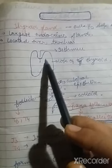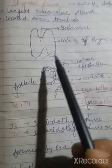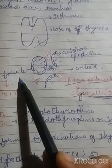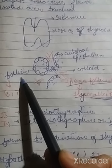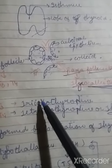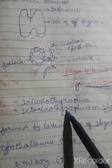The thyroid gland has an isthmus and a fourth lobe. There are two types of cells: parafollicular cells and follicular cells. The follicular cells secrete T3 and T4. T3 is triiodothyronine and T4 is tetraiodothyronine, also called thyroxine. The parafollicular cells release thyrocalcitonin (TCT).